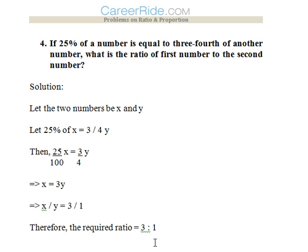Question number four: If 25 percent of a number is equal to three-fourth of another number, what is the ratio of first number to second number? Now we don't know the numbers so we would assume both the different numbers to be x and y respectively.